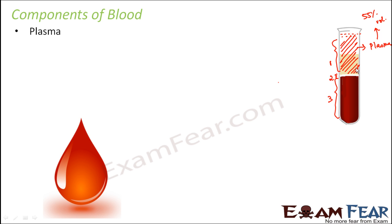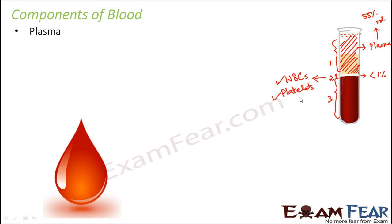In between was a thin buffy coat as the second layer, comprising less than one percent of the entire volume. This buffy coat was later found to contain two components of blood: white blood cells and platelets. Although present in very small amounts, they play very important roles, which we will discuss later.